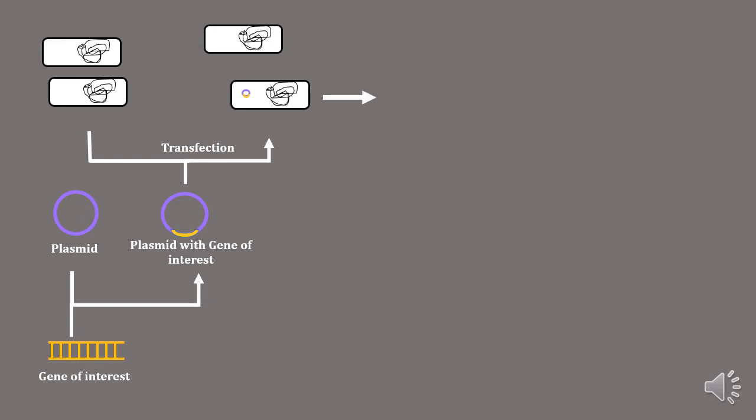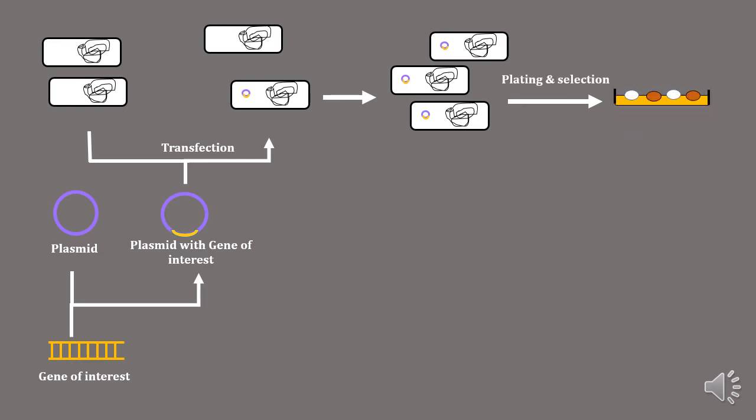We grow the cells to increase the copy number of cells containing the recombinant plasmid. Once we get enough copy numbers, we proceed to selection on an agar plate which contains antibiotic.